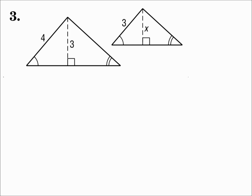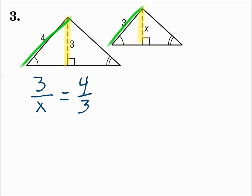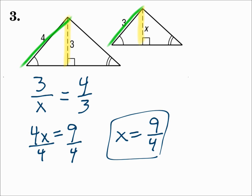Number three. Here we have two similar triangles and their altitudes drawn. It's the altitudes because it goes from a vertex to the opposite side, hitting the opposite side at a right angle. The altitude on the left is 3, and the altitude on the right is x. Those are proportional the same way the sides are. The side on the left is 4, and the side on the right is 3. Set up your proportion: 3 over x equals 4 over 3. Left triangle over right triangle equals left triangle over right triangle. Cross multiply and solve — you get 9 fourths. The altitudes are proportional to the sides in similar triangles.